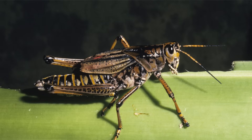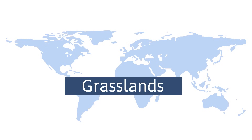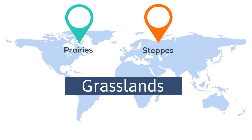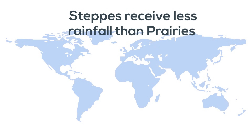Grasslands can be further divided into prairies and steppes. Prairies are grasslands with tall grasses while steppes are grasslands with short grasses. Steppes receive less rainfall than prairies and receive only 10 to 20 inches of rainfall a year.